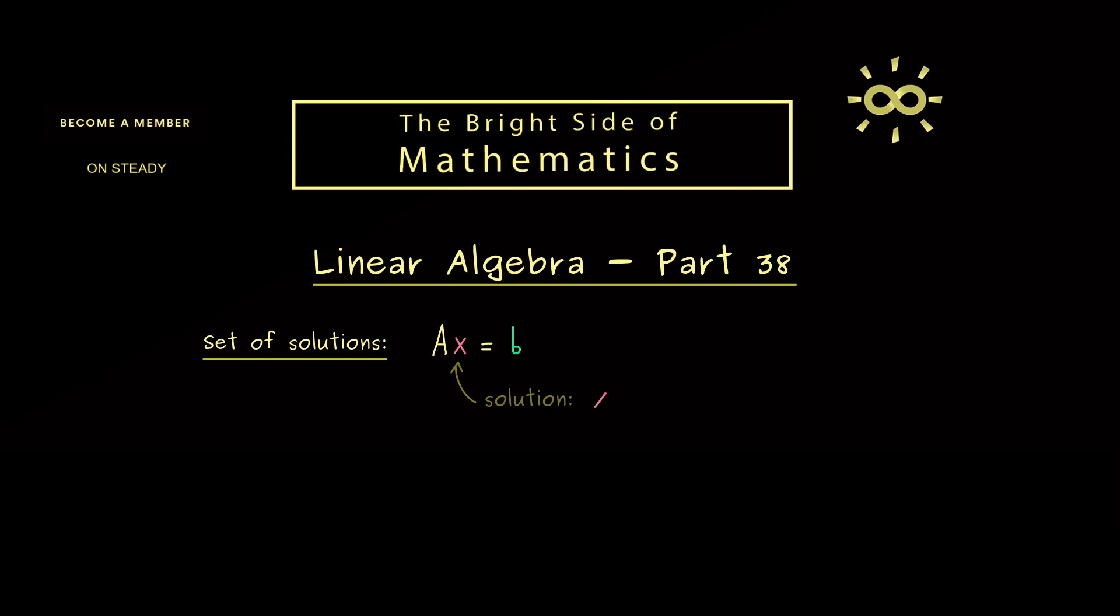More concretely, this means we search for explicit vectors we can put into the system. This vector we could call x̃ should solve the system, which just means if you multiply A with x̃, we actually have the equality with b.